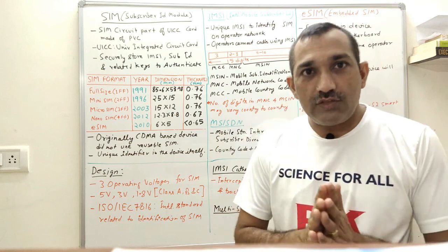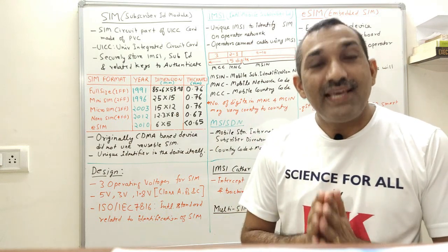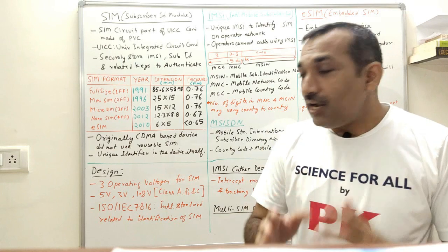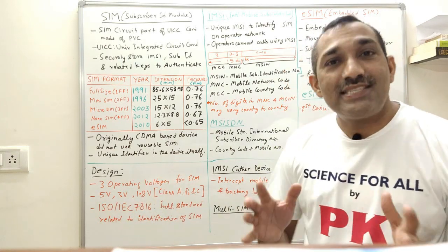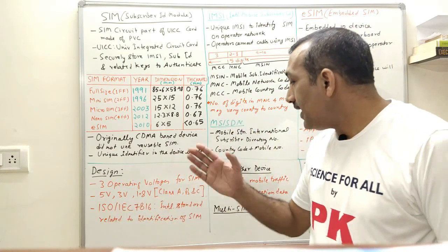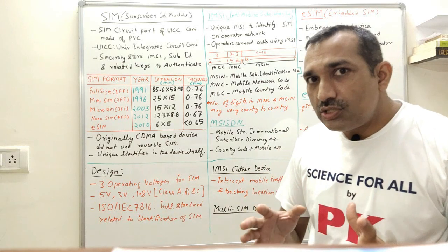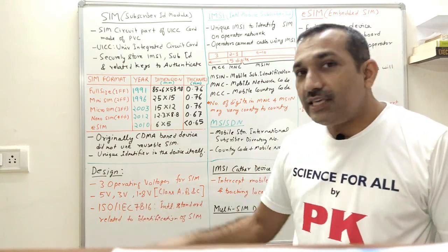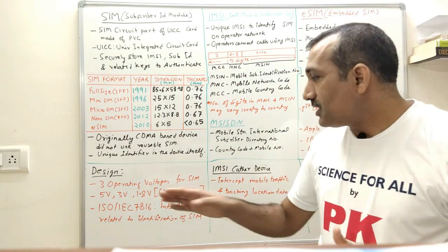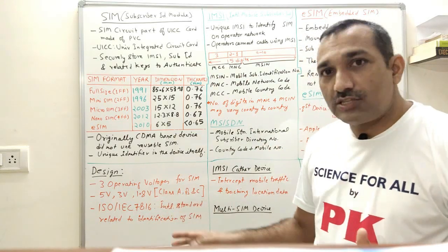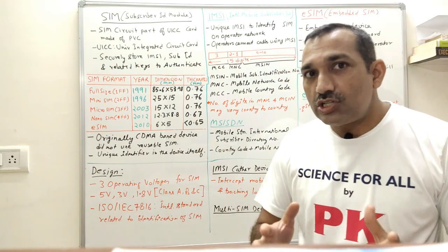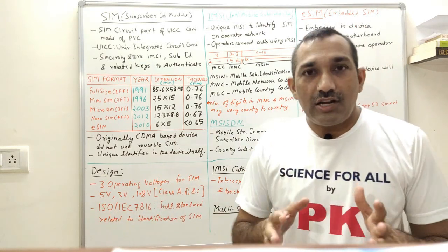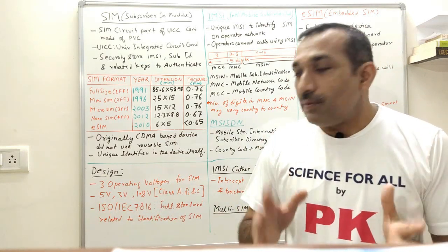As per standard, a SIM card has three operating voltages: 5V (Class A), 3V (Class B), and 1.8V (Class C). The international standard related to SIM card identification is ISO/IEC 7816, where ISO is the International Organization for Standardization and IEC is the International Electrotechnical Commission.